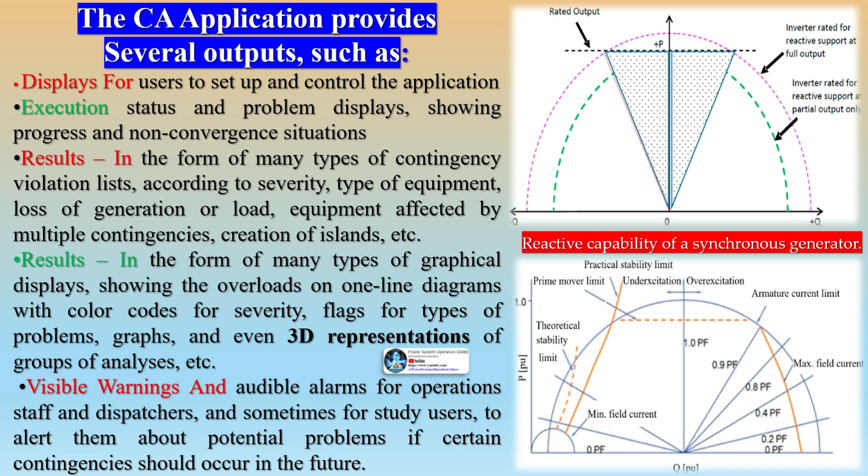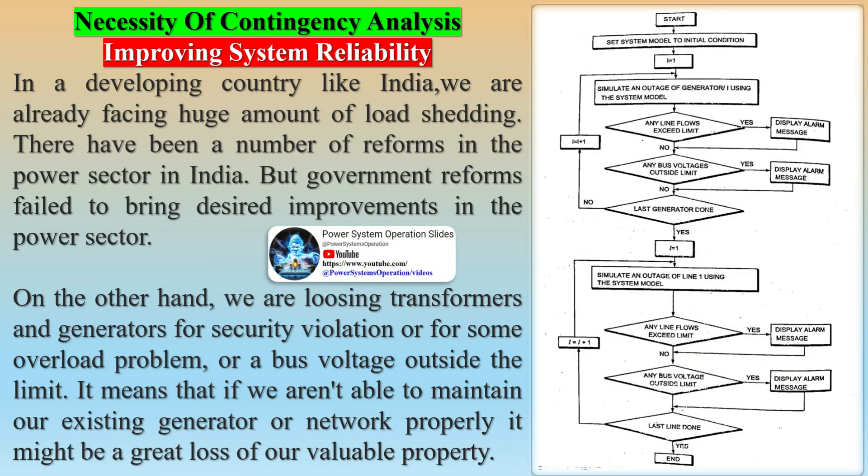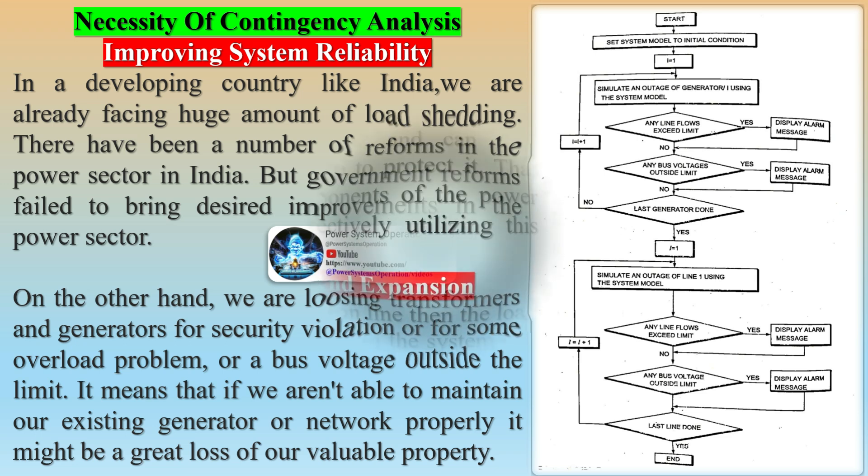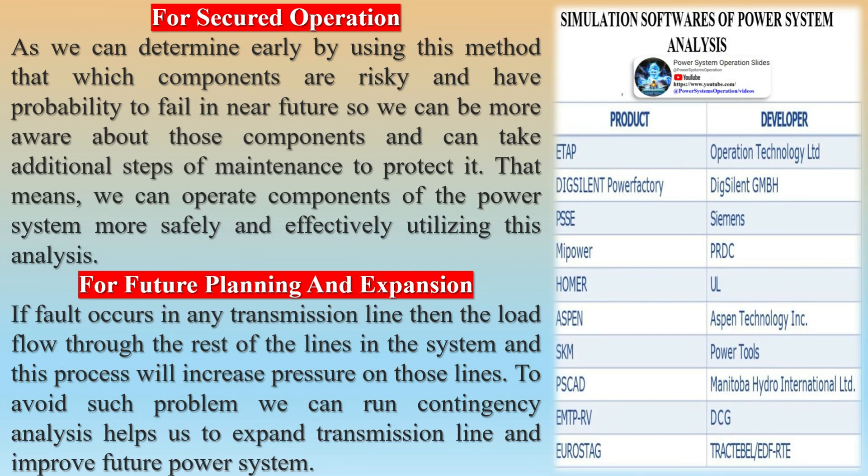Contingency creation, selection, and evaluation are the three main divisions of contingency analysis. Many studies have focused on contingency selection with the goal of reducing the extensive list of contingencies by choosing those outages with serious limit violations. The individual outages are then evaluated using load flow, and the activity continues until there are no post-contingency violations. Contingency creation is the first stage of the contingency analysis process.